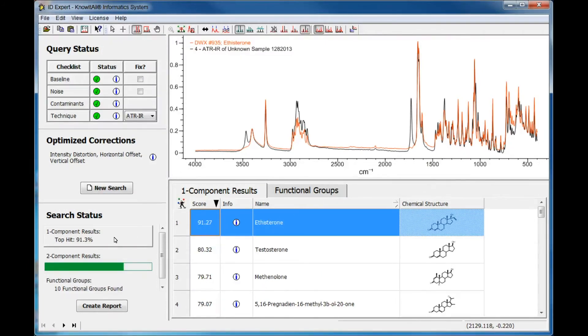As you can see, the one component result is a 91.3% match. Since this was not an exact match, Know-It-All continues and looks for multi-component matches.